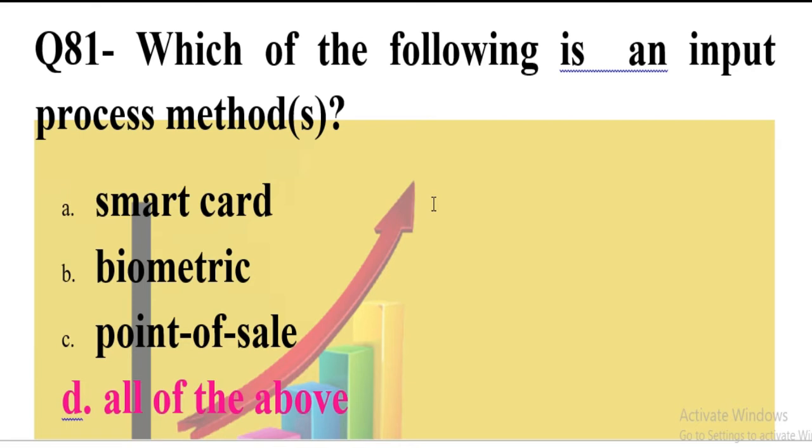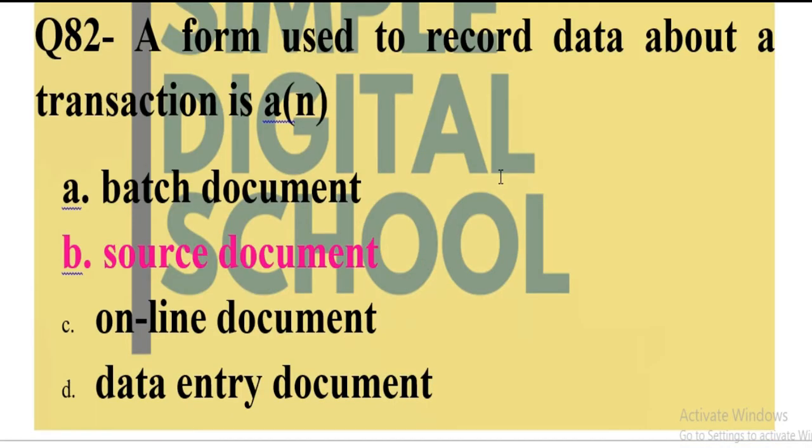Let's start. Question number 81: Which of the following is an input process method? Smart card, biometric, point of sale, all of the above. The answer is all of these. All are the input process methods to take input into the system.